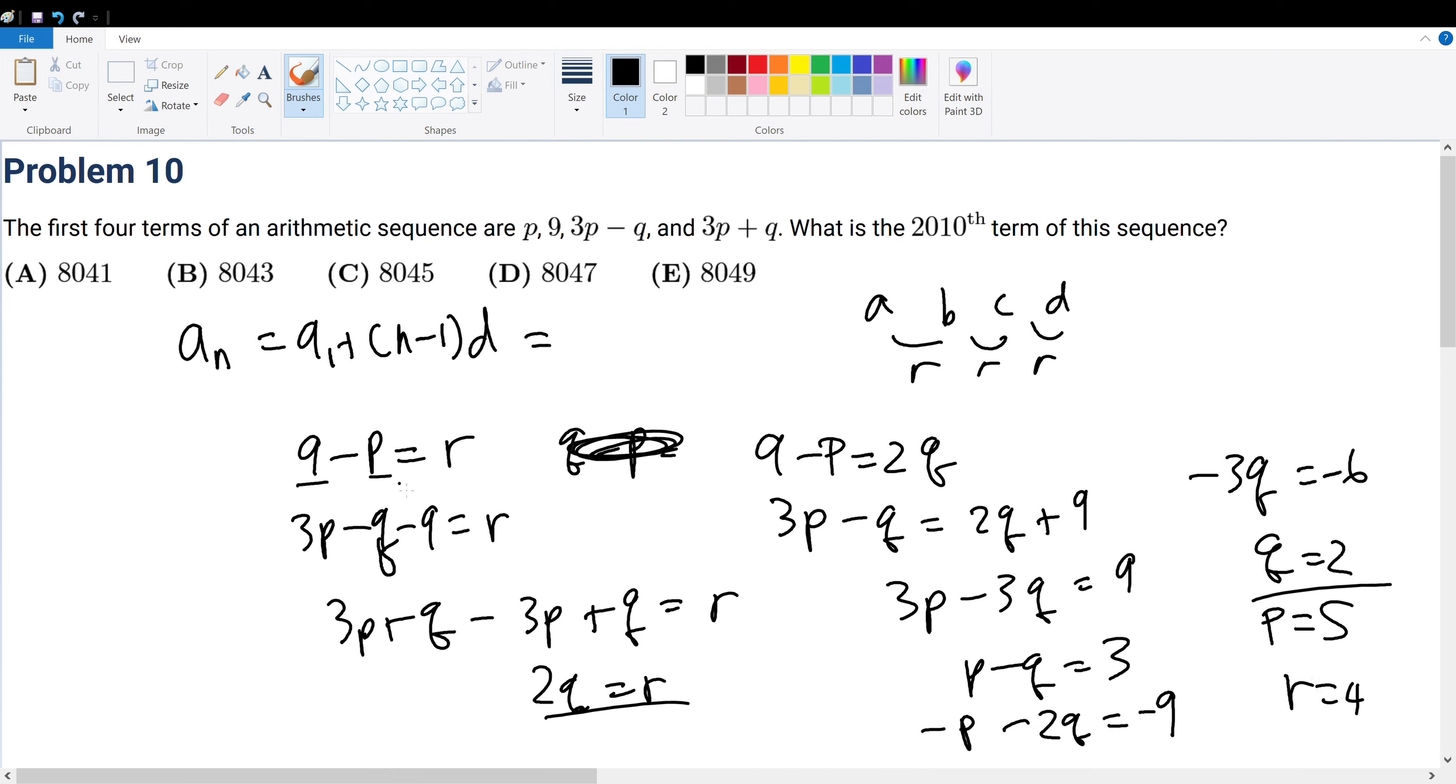Because a sub 1 will simply be 9 minus the r value, which is 4, which gives 5. So that's 5 plus n minus 1 times the common difference of 4. So that's equal to 4n plus 1.